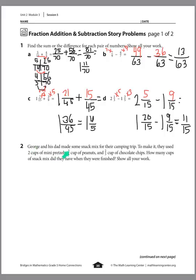Number 2: George and his dad made some snack mix for their camping trip. They used 2 cups of mini pretzels, 3/4 cup of peanuts, and 2/3 cup of chocolate chips. How many cups of snack mix did they have when they were finished? We're going to add 2 plus 3/4 plus 2/3. Really, we just need to add the 3/4 and the 2/3 and add in that 2 wholes.